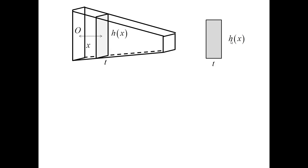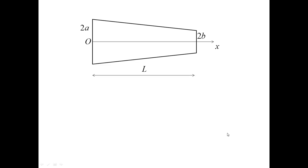For calculations, it's easier to deal with the two-dimensional view, where I introduce the coordinate system with the origin at O. The X-axis is measured from left to right, and here we have H of X, 2A on the left, 2B on the right, and the beam length is L.